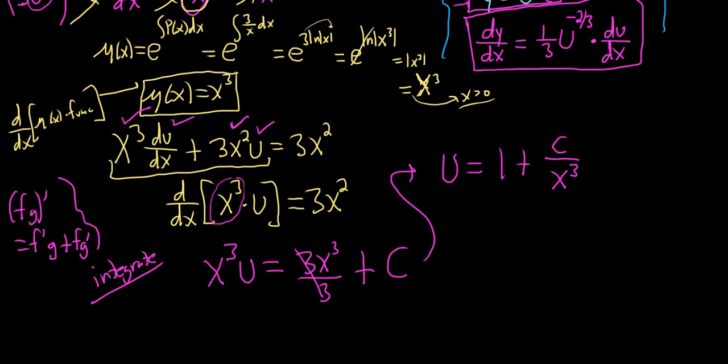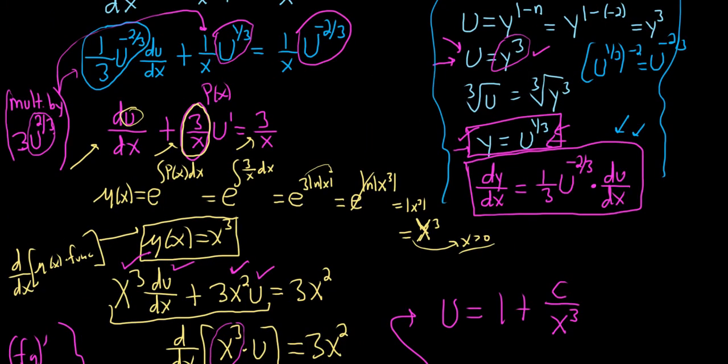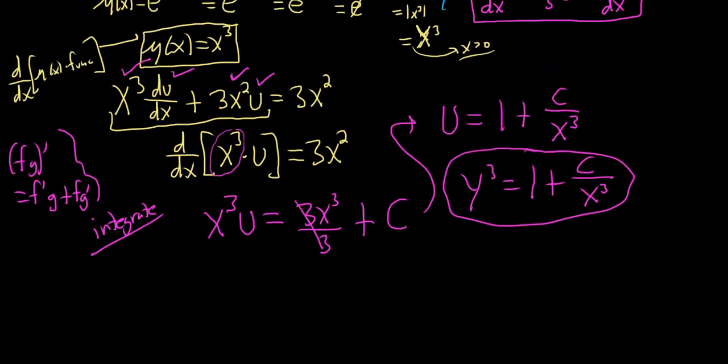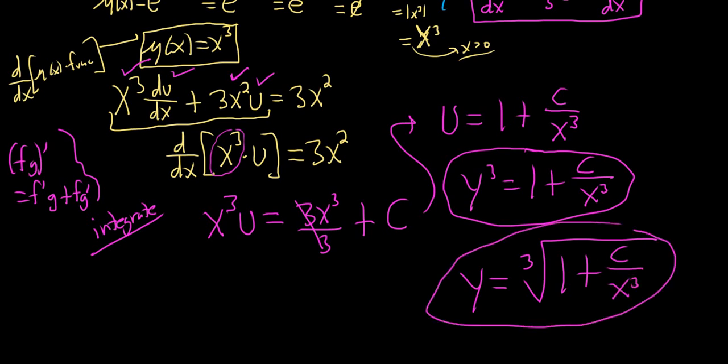And we're not done, right? We need to know what u is. u is y cubed. So let's go back in and plug it in. So y cubed equals 1 plus c over x cubed. This would be an implicit solution, right? We didn't really solve for y. If you solve for y, you would take the cube root of both sides. And you would get the cube root of 1 plus c over x cubed. So this would be what's called an explicit solution. And the first one is called an implicit. Explicit means that you actually solve for y.